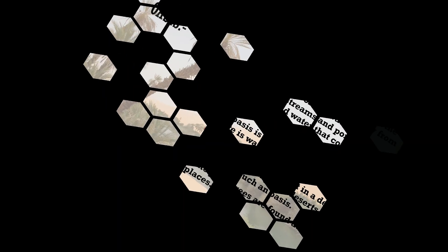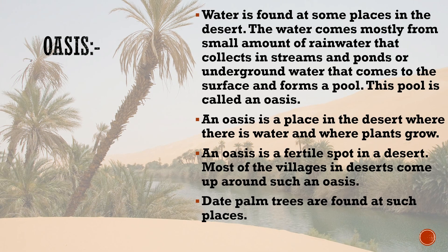Now let's learn about oasis. Water is found at some places in the desert. The water comes mostly from a small amount of rainwater that collects in streams and ponds, or underground water that comes to the surface and forms a pool. This pool is called an oasis.